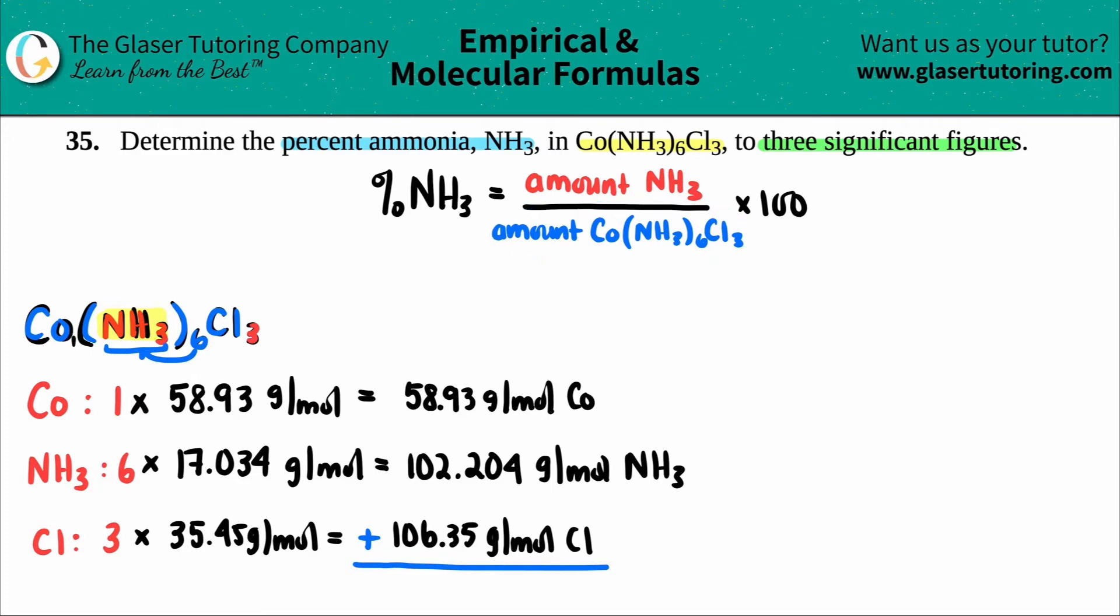So we got 58.93 plus 102.204. And then we have 106.35. So the total number is 267.484. And that's grams per mole. And that's the total molar mass.